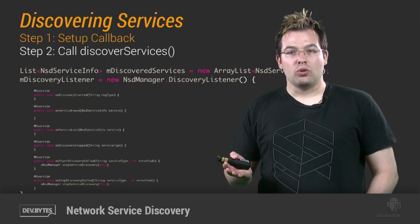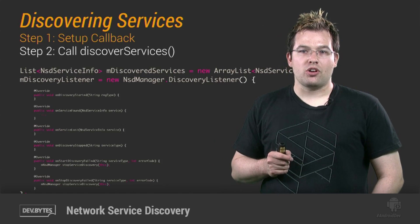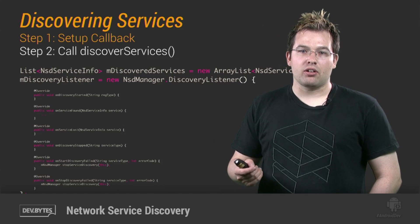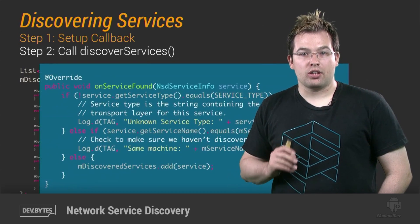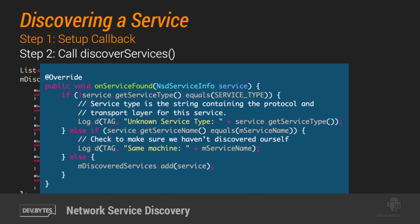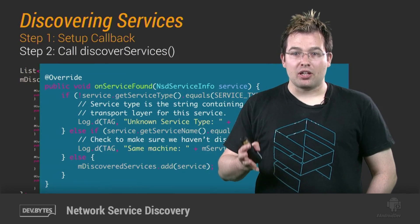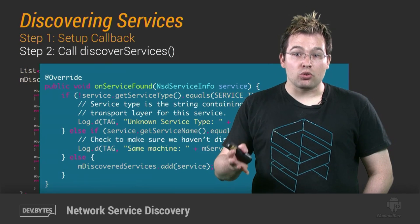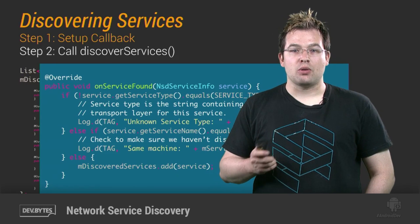The listener will get a callback for each device found, and of course there are callbacks where your app can handle any errors. The important method here is onServiceFound, which is where we find out about all the services and devices we're potentially interested in and store them in a list. This is the list you'll typically present to the user to let them pick which devices they want to connect to.